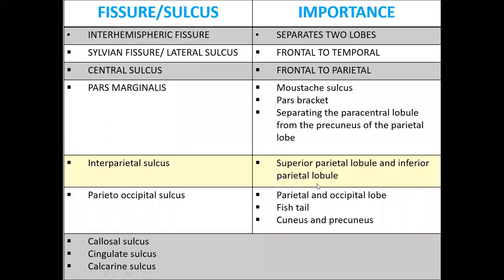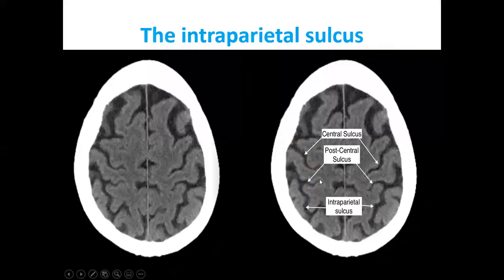The intraparietal sulcus divides the parietal lobe into the superior parietal lobule and the inferior parietal lobule.